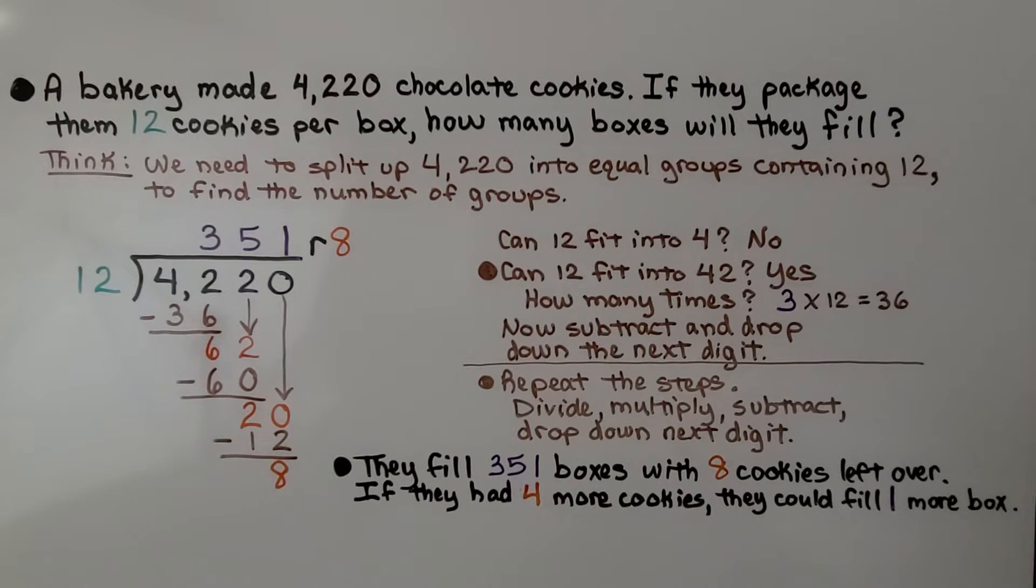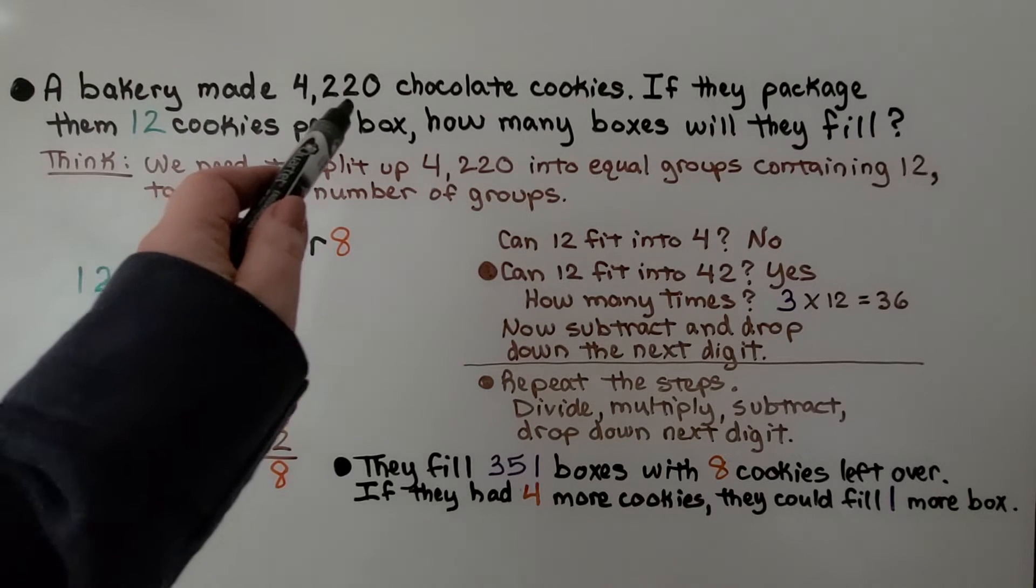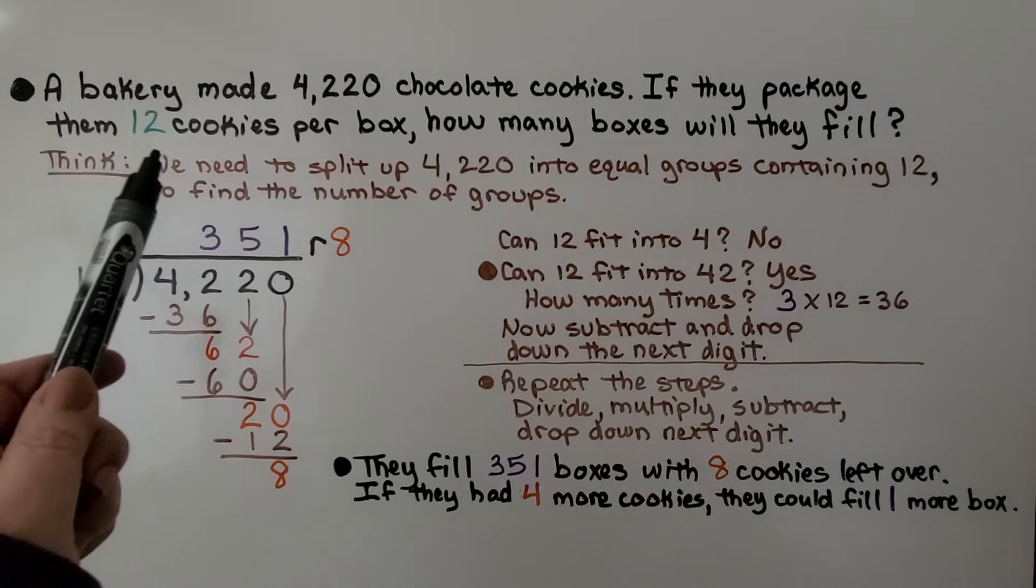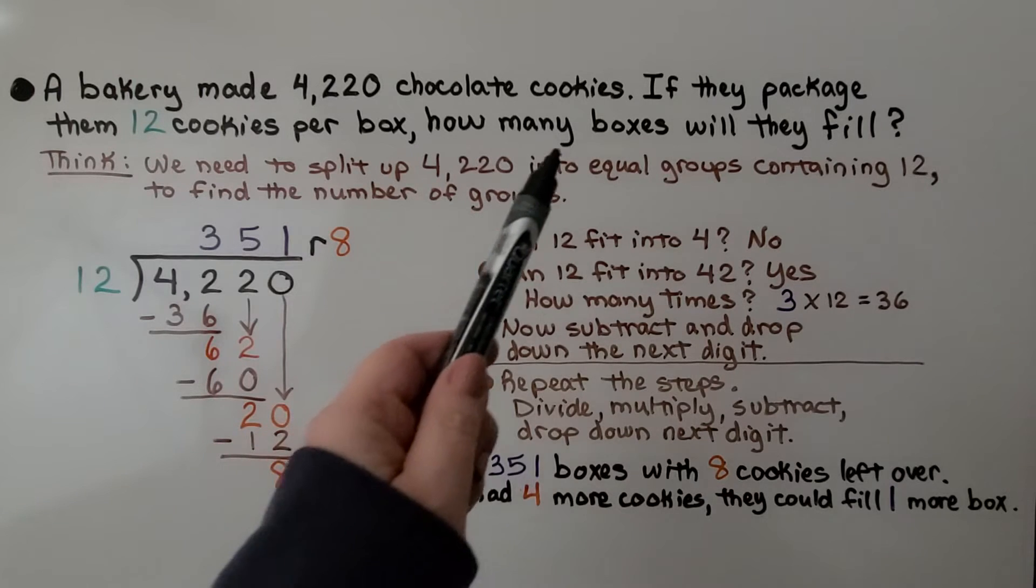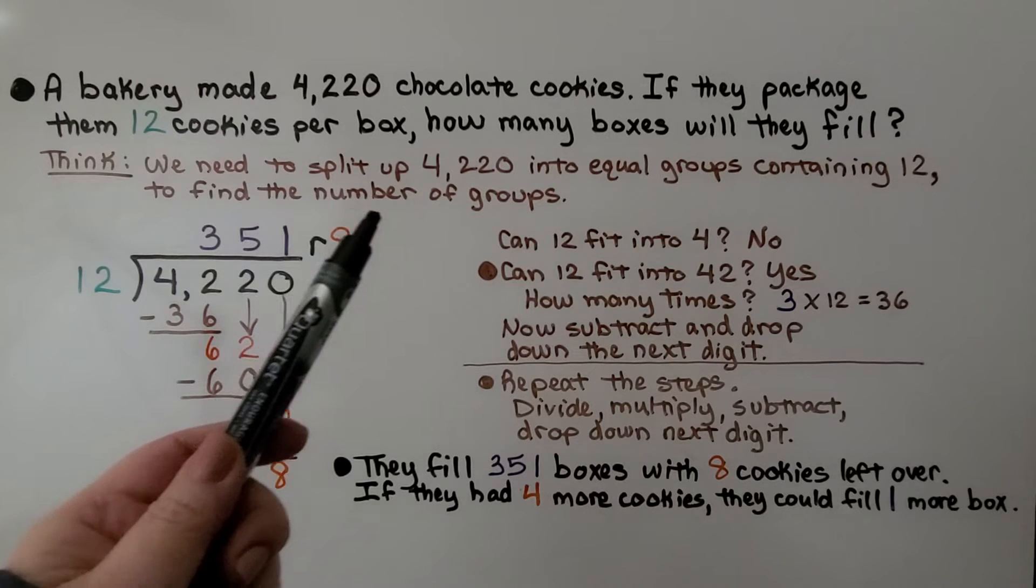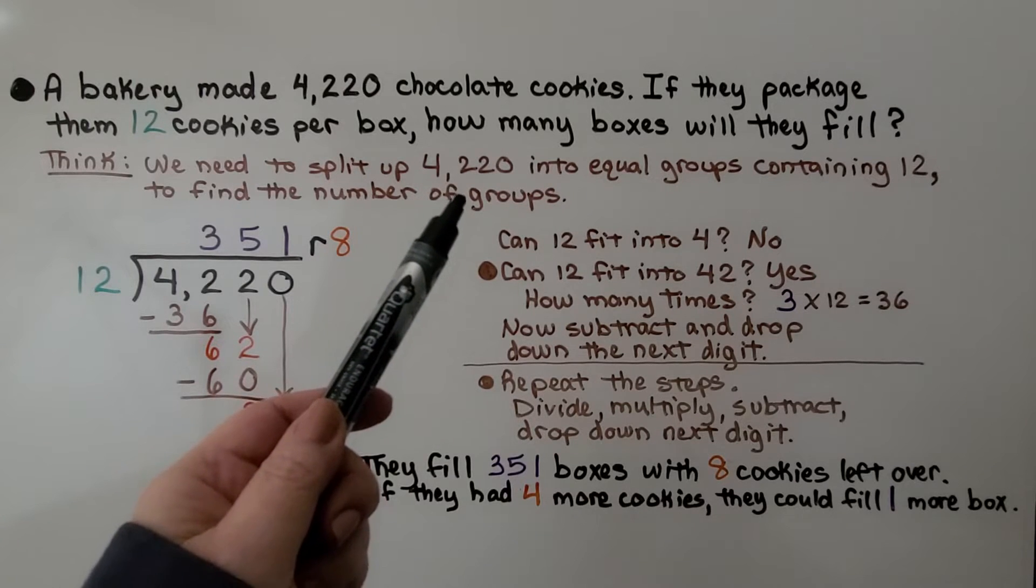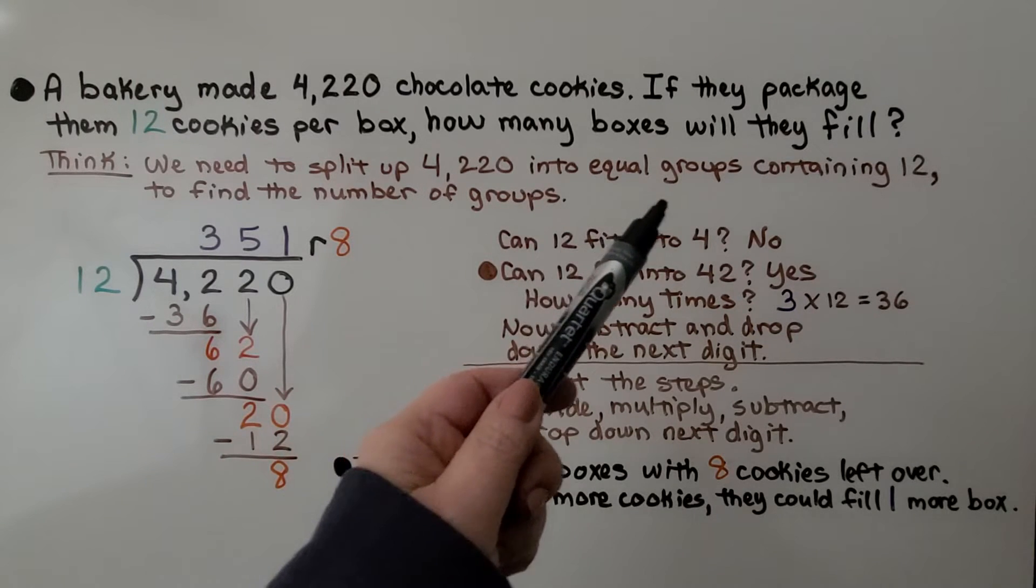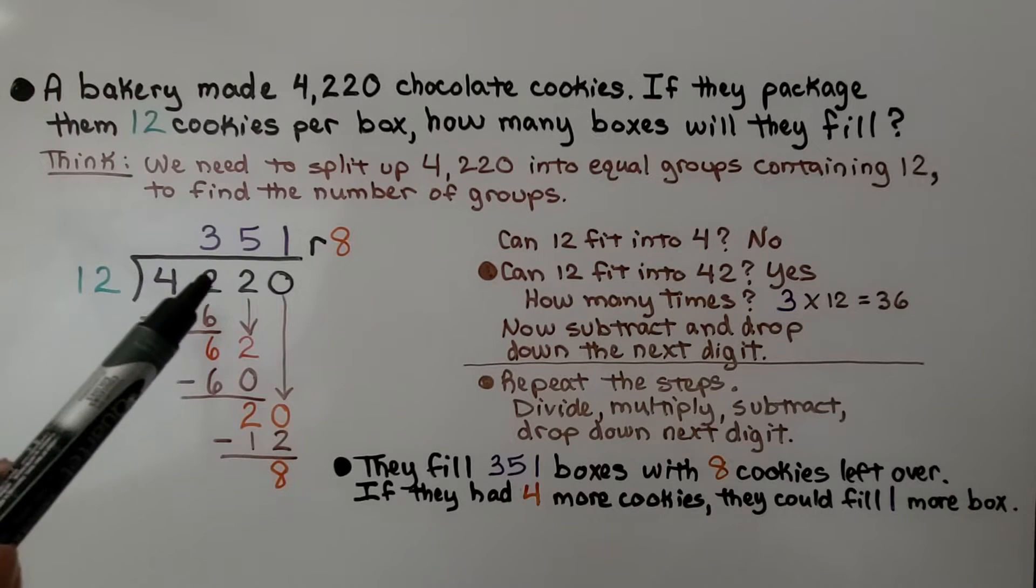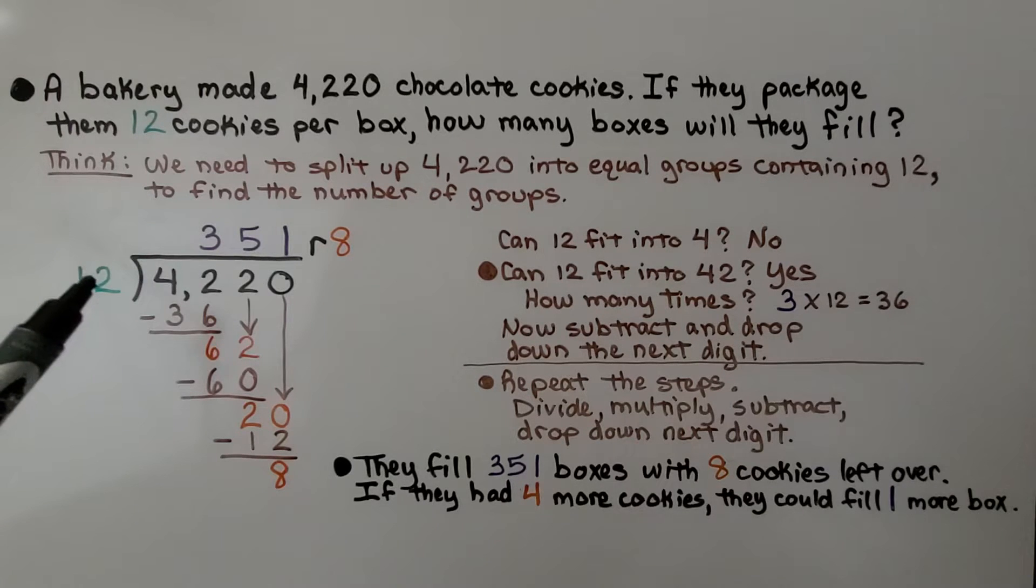A bakery made 4,220 chocolate cookies. If they packaged them 12 cookies per box, how many boxes will they fill? We need to split up 4,220 into equal groups containing 12 to find the number of groups, to find the number of boxes.